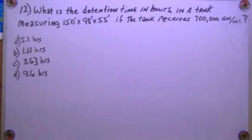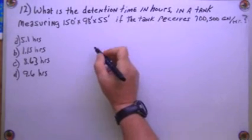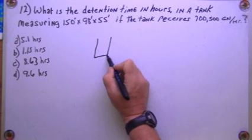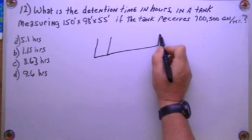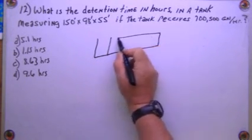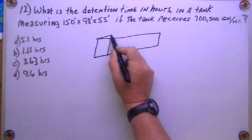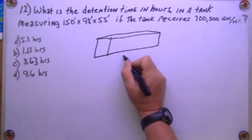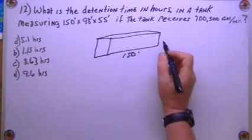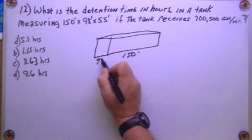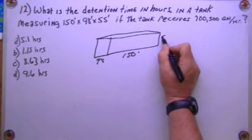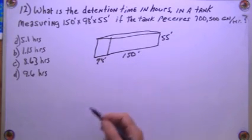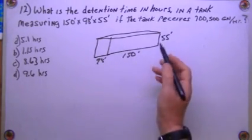Well, first thing we're going to do is, I like to draw the tank, just maybe not to scale, but draw it anyway, because it appears to be a square tank. There we go, and we'll make it 150 feet length times width, 98 feet by 55 feet, and it really doesn't matter what order you put these in because it's going to do the volume, so you're going to multiply them all together anyway.